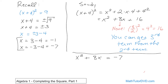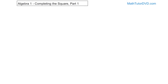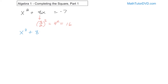Here we have x squared plus 8x. Let's take that middle term — that 8 — divide it by 2 and square it. As you already know, that gives you 4 squared, which is 16. Now, remember: you can do anything you want to both sides of an equation as long as you do it to both sides. So let's rewrite: x squared plus 8x equals negative 7. We take that middle term, divide it by 2, square it — that gives us 16. I can add anything I want to the left-hand side as long as I add it to the right-hand side. So let me add 16 to both sides. I've changed nothing.